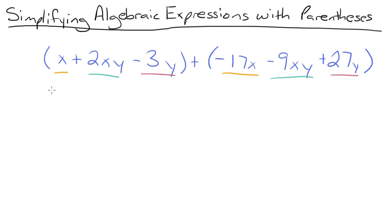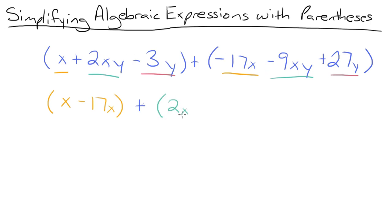So now we can write them in parentheses. We have x minus 17x, plus 2xy minus 9xy, plus negative 3y plus 27y.